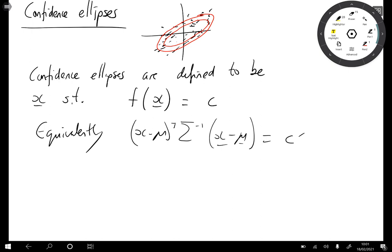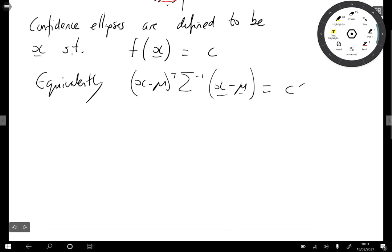So why is this an ellipse? Well, you probably remember from school that the equation of an ellipse is if you had x squared over a squared plus y squared over b squared equals 1. This gives us an ellipse.